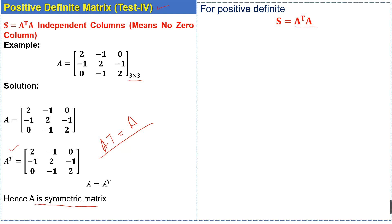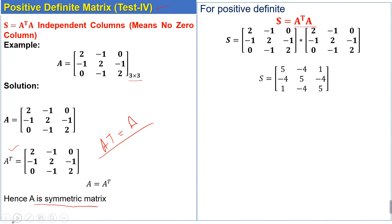For the positive definite test, we calculate the product of A transpose times A. We multiply matrix A transpose with matrix A and obtain the product matrix S. We can see that there is no zero column in this product matrix.